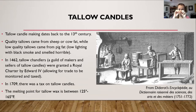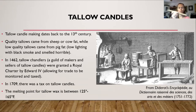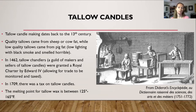Again, this is a beeswax candle, but use your imagination — imagine this being a thin little rush light. You can imagine how little light that would provide. Now imagine this being a tallow candle; it will provide more light because there is more wax there. The sheep and cow fat did not produce as much black smoke and did not smell as bad as pig fat. In 1462, the Tallow Chandlers — a guild of makers and sellers of tallow candles — were granted a royal charter by Edward IV, allowing trade to be monitored and taxed. In 1709, there was a tax on tallow candles.